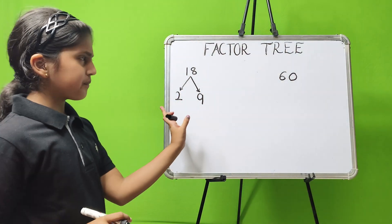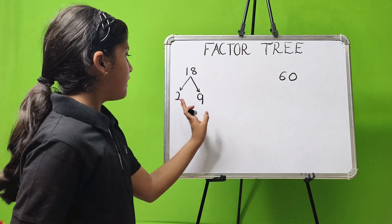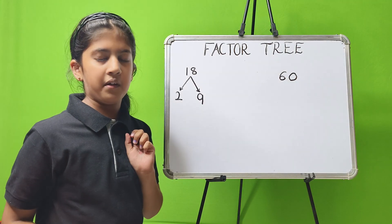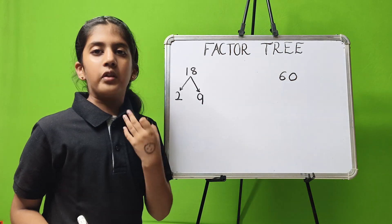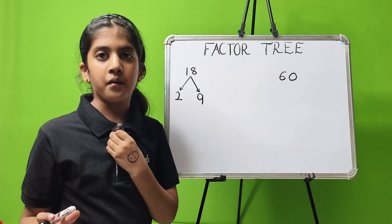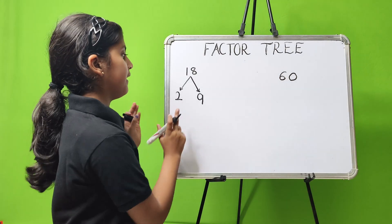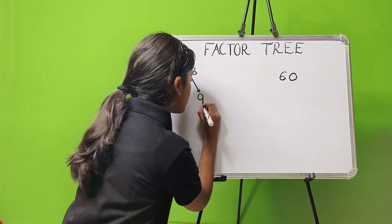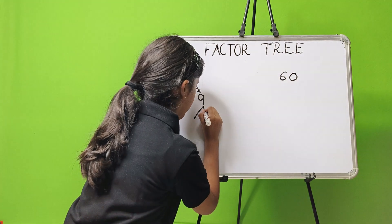2 is a prime number, 9 is a composite number. Now, we will break the composite number, not the prime number. Here 9 is a composite number, so we will break 9.